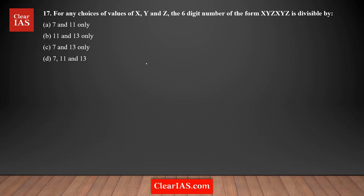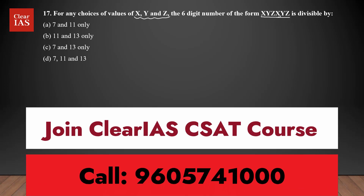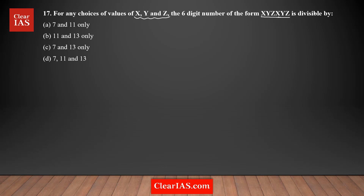This question is based on divisibility rules for any choice of values x, y, z. There are three variables x, y, z forming a six-digit number of the form xyzxyz — the same three digits repeated twice. The question asks which of the four answer options divides xyzxyz. Looking at the answer choices, you can see the numbers 7, 11, and 13.